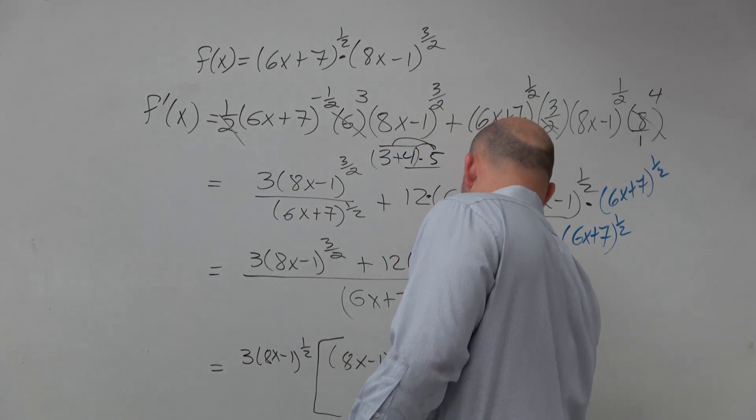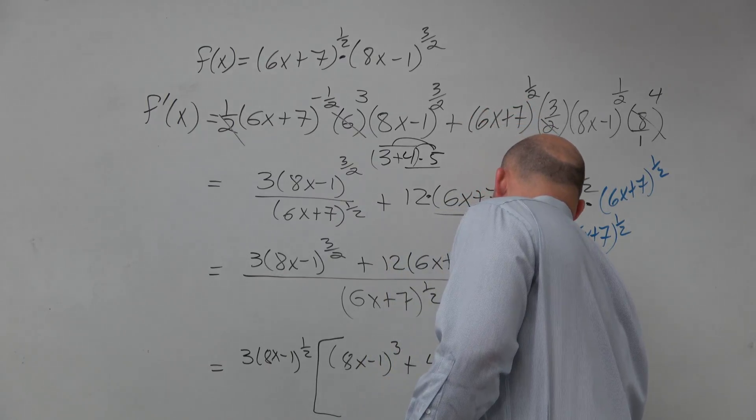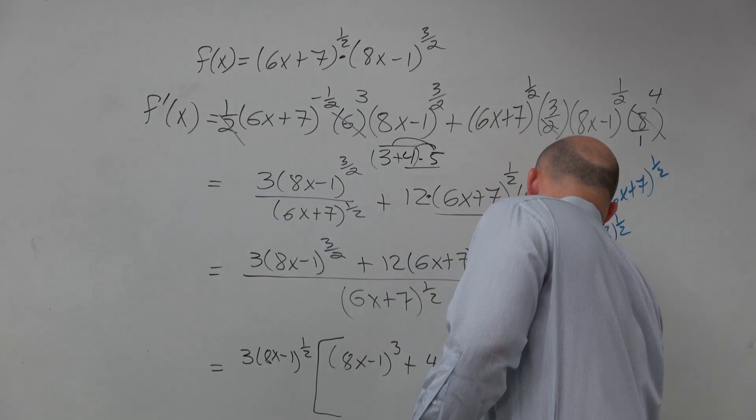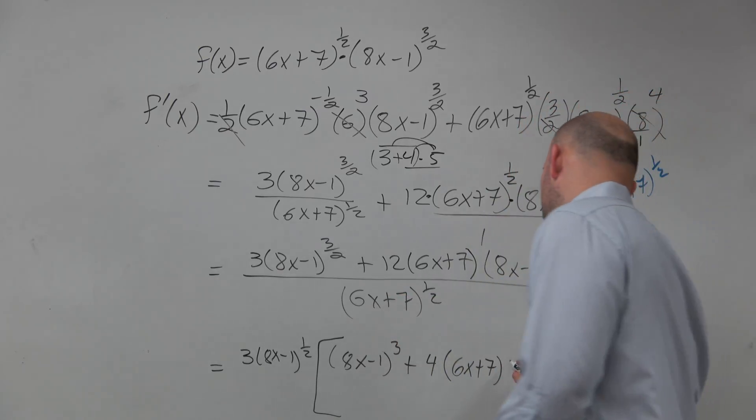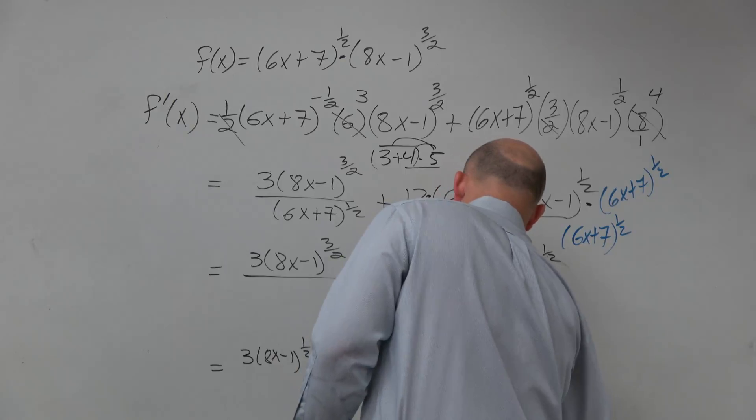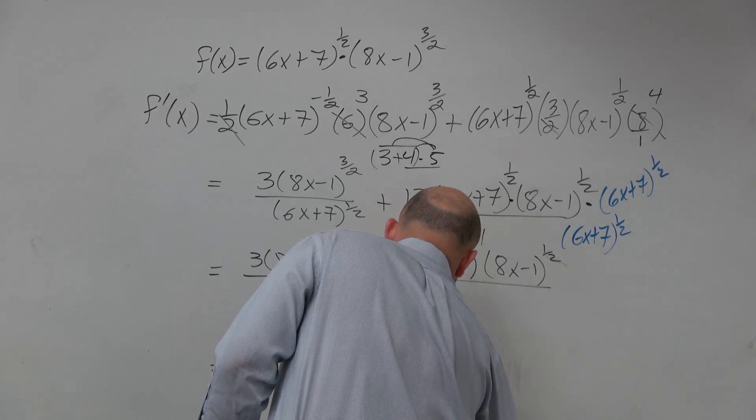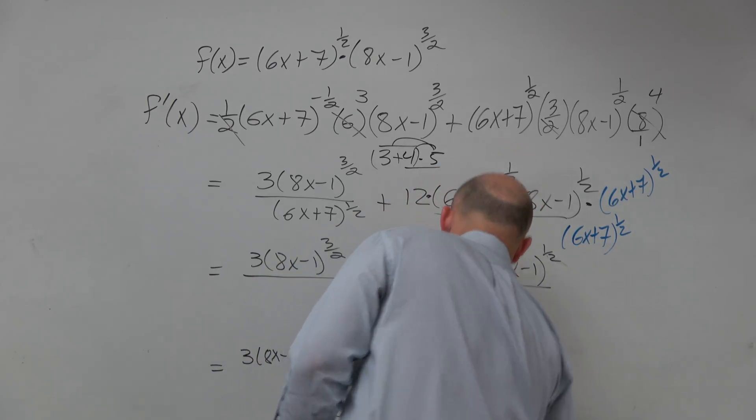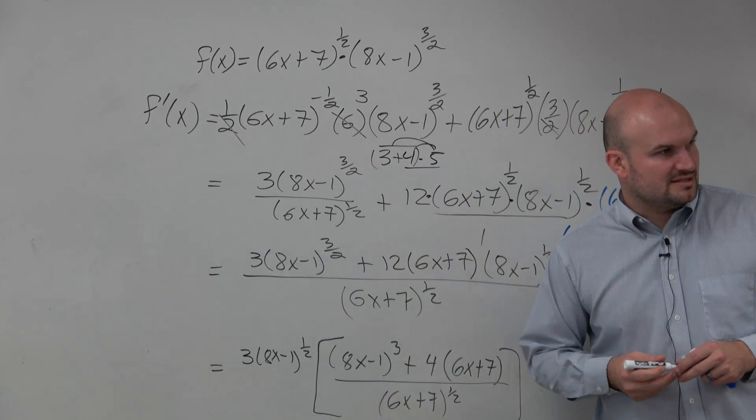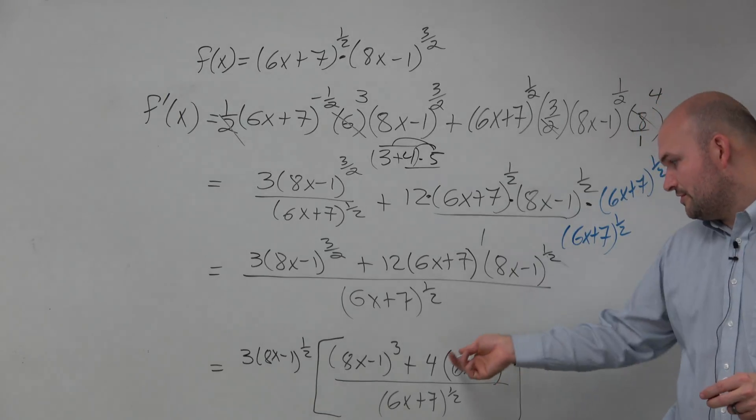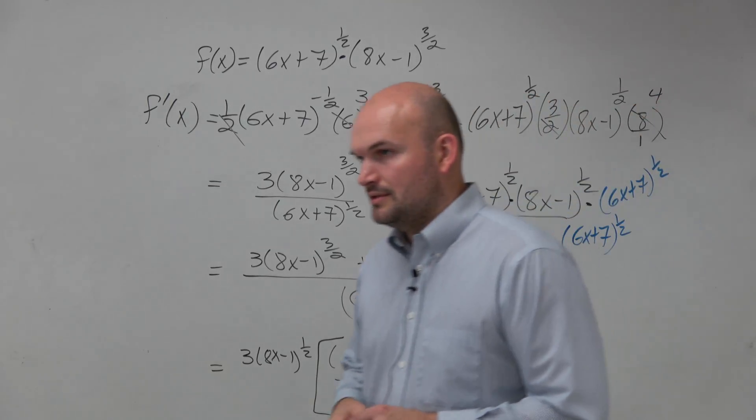Times, oh, that got factored out. 8x minus 1 got factored out. And then all over 6x plus 7 raised to the 1/2. And then, again, you could simplify that or it would just leave it as is, but I'm not too concerned about you guys figuring out what that would be simplified.